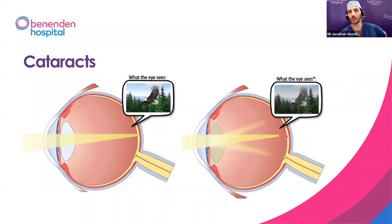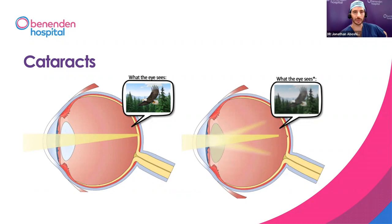A question I often get asked is: when is the right time to treat cataracts? Everyone over 30 has a bit of cataract. The time to do it is when your vision is affected such that you're happy to go ahead with surgery. It's an incredibly safe operation — the most common operation done on the NHS — but all surgery has a risk. Even if it's very small, it's always worth considering the risks versus the benefits. It's always a balancing act.